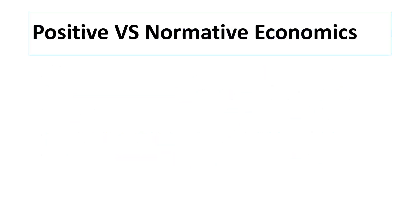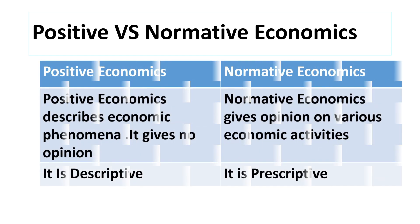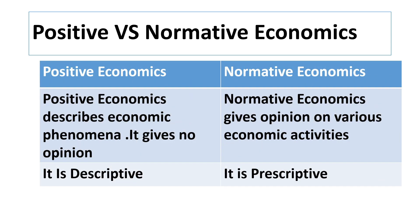Now we will know some differences between positive and normative economics. Positive economics describes economic phenomena and gives no opinion, whereas normative economics gives opinion on various economic activities. Positive economics is descriptive and normative economics is prescriptive.